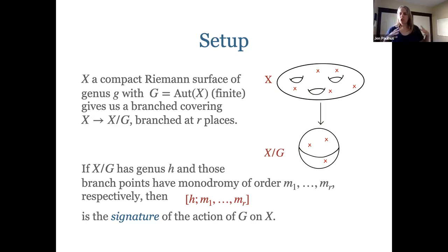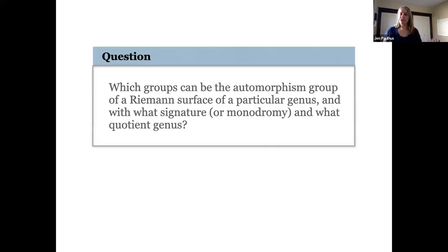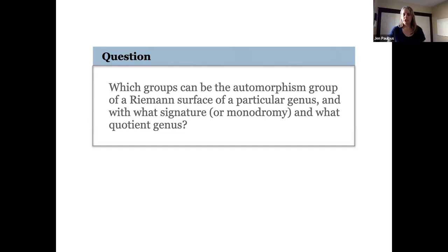There are lots of questions we could ask about this whole process: which groups can we have as automorphism groups? What about a particular genus? What about a particular signature? What about a particular quotient genus? There's a whole bunch of questions that have been asked and in many cases answered. I'm going to talk about small pieces of some of these sorts of questions.